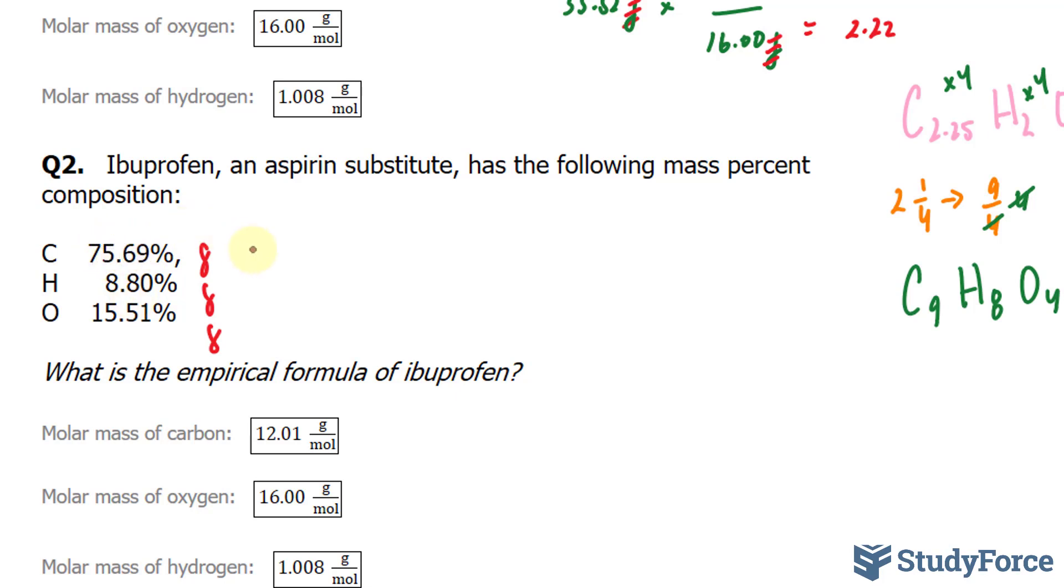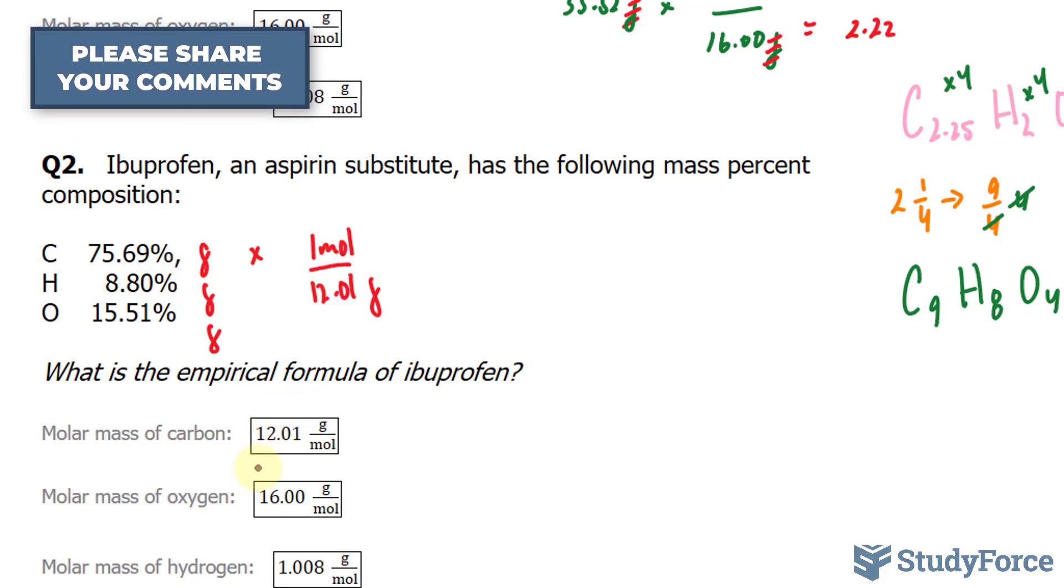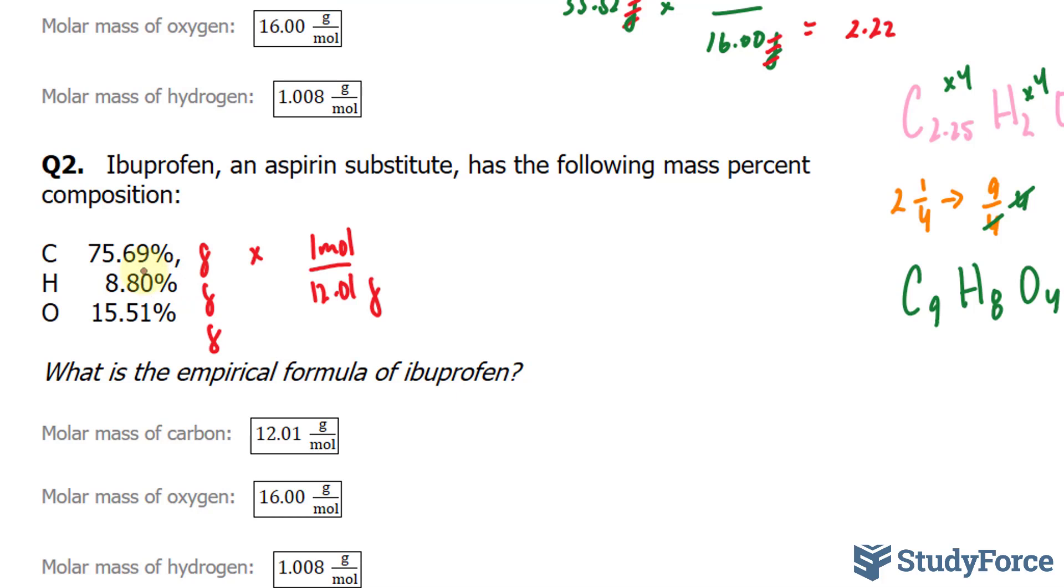For example, I'll multiply 75.69 by 1 mol over 12.01 grams. Notice that this is the flipped version of what has been given. Similarly, I'll multiply this by 1.008 where it's flipped, so I'll show that. I'll show it over here because I'm running out of room. I have 1 mol over 1.008 grams. And just to give you an idea of what I mean, this grams unit will cancel out with this one.